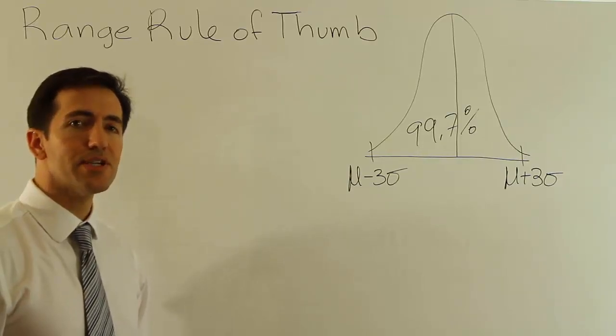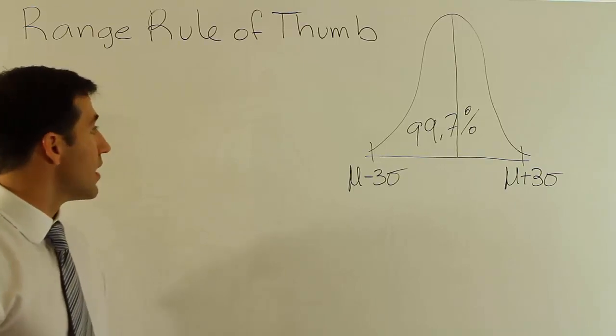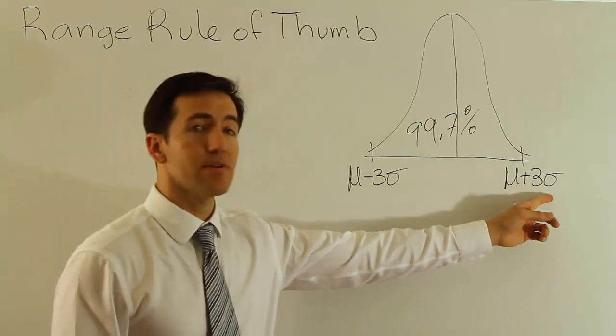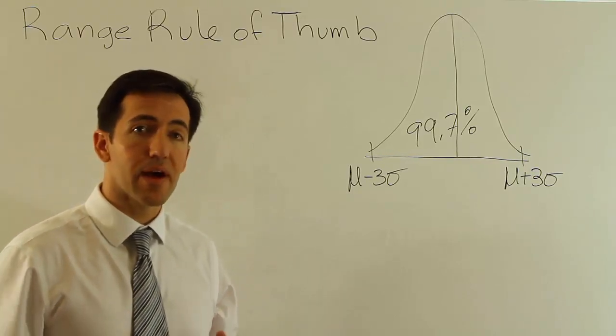In this video we're discussing an approximation technique called the range rule of thumb. It's designed to approximate the population standard deviation, which is often not known when you're looking at a journal article or something like that.